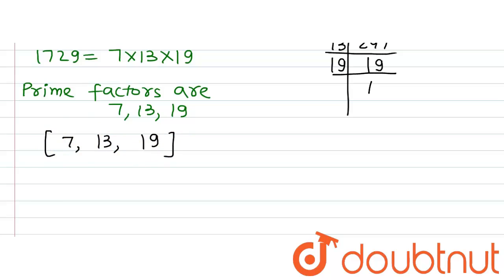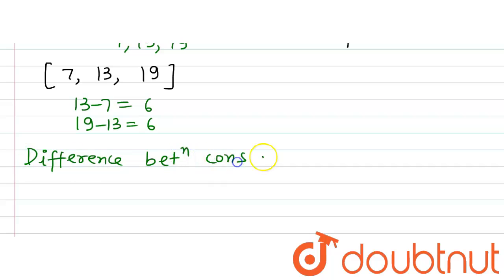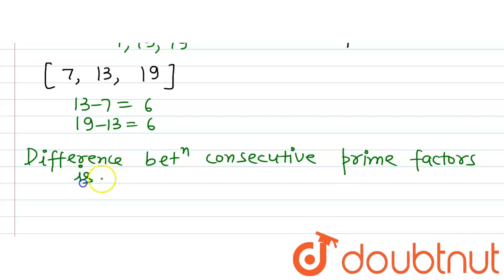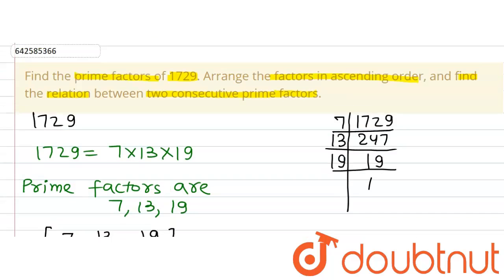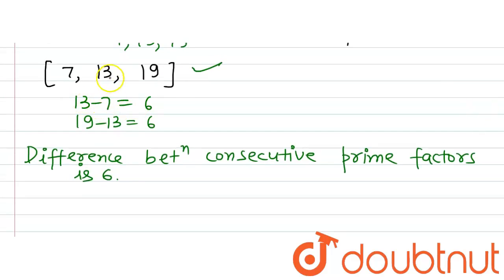Now we are supposed to find out a relationship. If we observe, the difference between 13 and 7 is 6, and the difference between 19 and 13 is also 6. So the relation is that the difference between consecutive prime factors is 6. We found the prime factors of 1729 — which are 7, 13 and 19 — arranged them in ascending order, and found that the difference between consecutive prime numbers is 6.